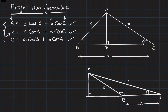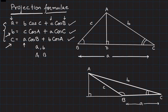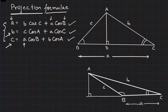When writing b, there will not be any angle B on the right-hand side, giving c·cos A + a·cos C. It's a cyclical pattern. Similarly, c = a·cos B + b·cos A. When writing a side, you take the other two sides and pair each with the remaining angle. Solving multiple problems is the best way to remember any formula.